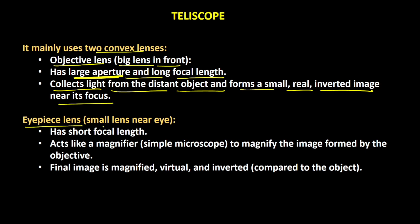The eyepiece lens has a short focal length and it acts like a magnifier, something very similar to a simple microscope, to magnify the image formed by the objective lens.